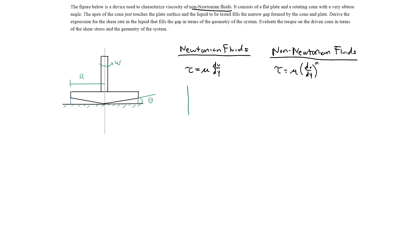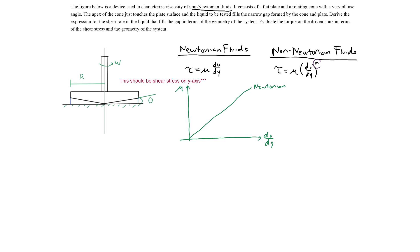If we plot shear stress versus the velocity gradient, a Newtonian fluid has a linear relationship. However, for non-Newtonian fluids, since the equation is raised to some power n, the relationship is nonlinear — it could be concave down or concave up. This is the main difference between non-Newtonian and Newtonian fluids, and it doesn't change the overall process of this problem.